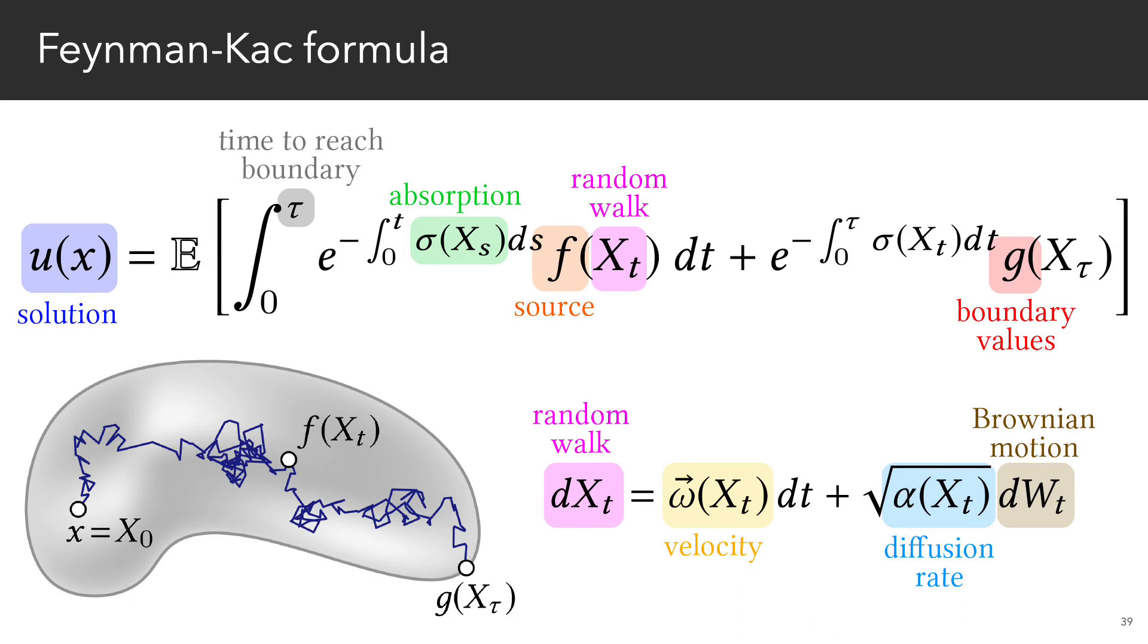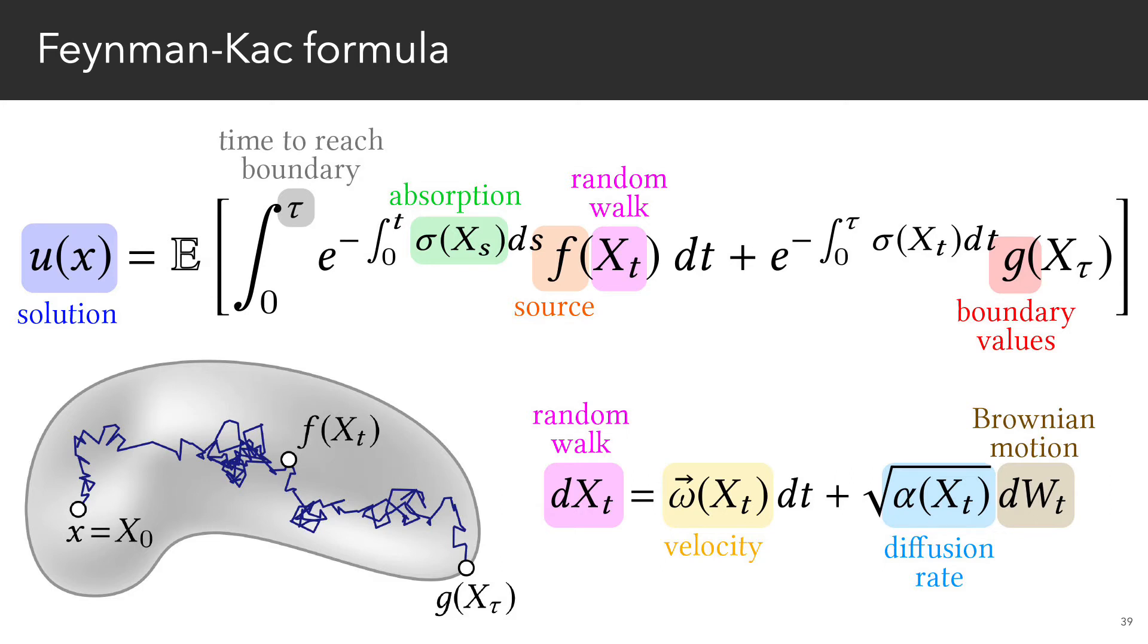More importantly, unlike classic integral equations, the Feynman-Katz formula handles spatially varying coefficients. As a result, we can use it to build a new recursive but deterministic integral equation, which in turn leads to modified walk-on spheres algorithms for solving variable coefficient PDEs.